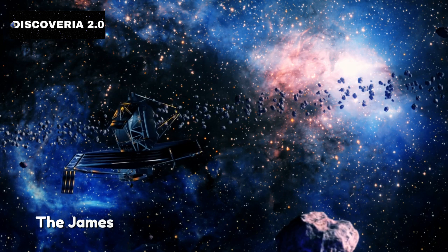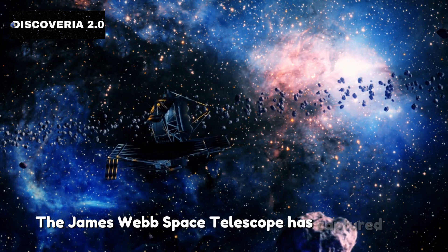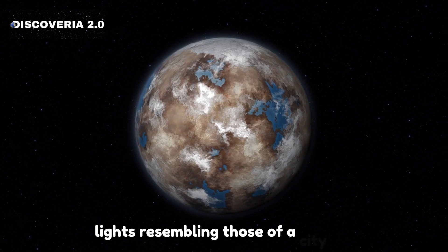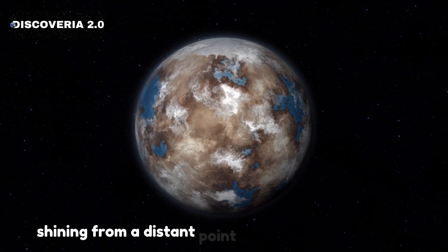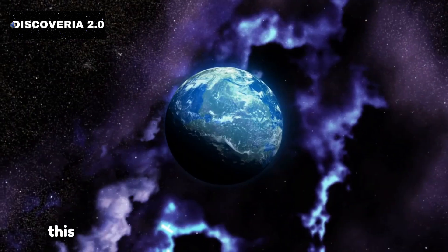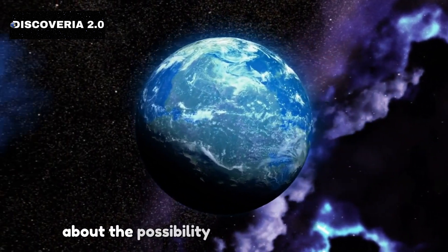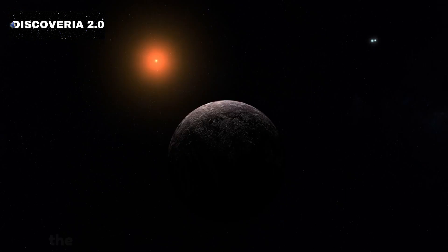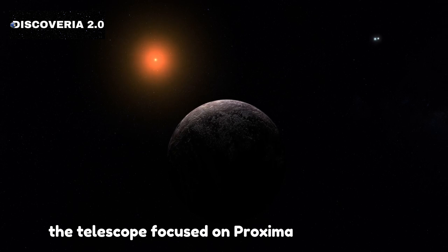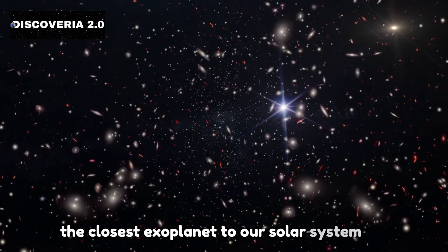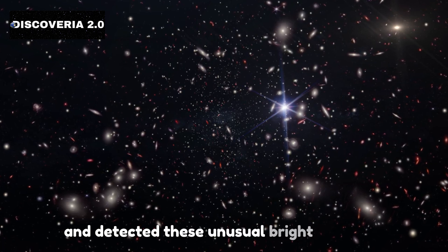The James Webb Space Telescope has captured something truly remarkable, lights resembling those of a city, shining from a distant point 7 trillion miles away. This discovery has sparked immense curiosity about the possibility of life beyond Earth. The telescope focused on Proxima Centauri b, the closest exoplanet to our solar system, and detected these unusual bright lights.